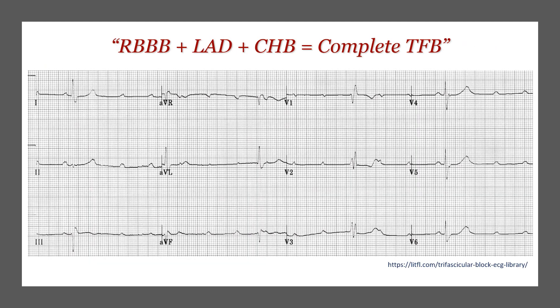Lastly, looking at this ECG: we have right bundle branch block, and the axis shows lead one pointing up and AVF pointing down — left axis deviation. Checking the P waves, they are not talking to the complexes at all, so we have a complete heart block. Combining the three findings gives us a complete trifascicular block.